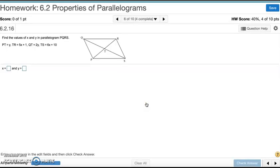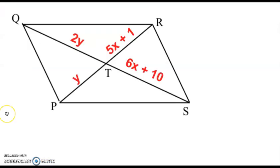Number six. Find the values of X and Y in the parallelogram PQRS. So let's take a closer look at it. Writing in all my measures, this is 2Y, 6X plus 10, and Y in 5X plus 1.